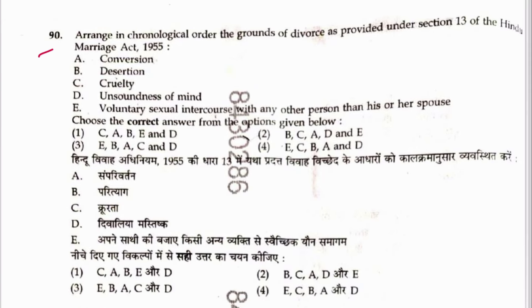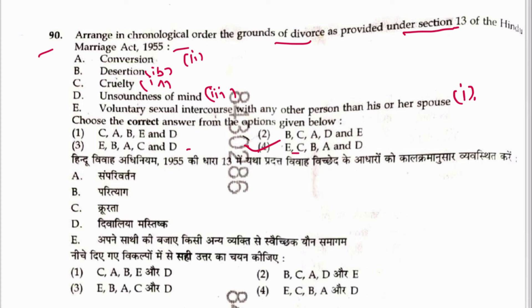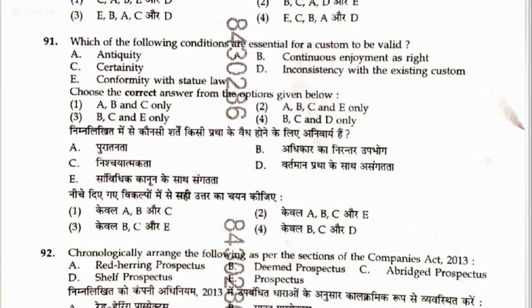Question 90: Arrange in chronological order the grounds of divorce under Section 13 of the Hindu Marriage Act. Voluntary sexual intercourse with any other person — Clause 1. Cruelty — Clause 1A. Desertion — Clause 1B. Unsoundness of mind — Clause 3. Conversion — Clause 2. Sequence is E, A, C, B. Answer is noted. Question 91: Conditions for custom to be valid — antiquity yes, certainty yes, conformity with statute of law not required, continuous enjoyment of right yes, inconsistency with existing custom — no, consistency is required. A, B, C are correct. Answer is 1.